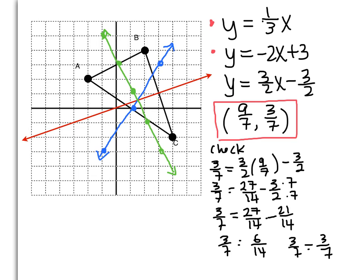And I know that (9/7, 3/7) also works in this last equation of 3/2 x - 3/2. In conclusion, that means that our circumcenter is (9/7, 3/7).